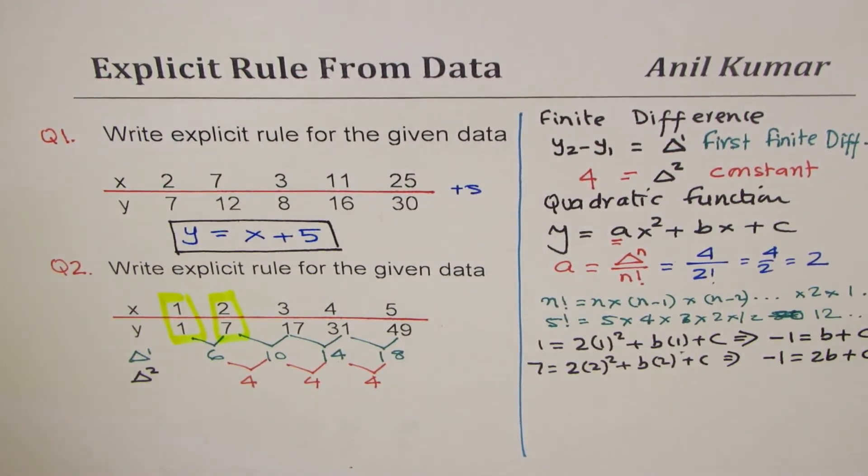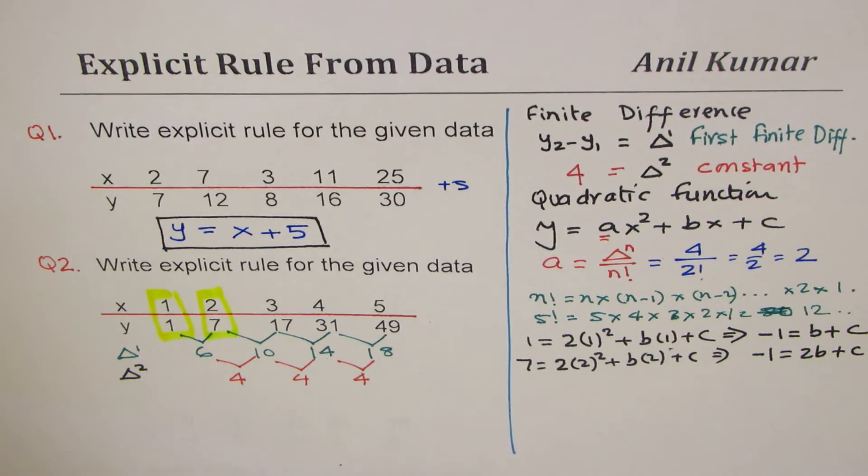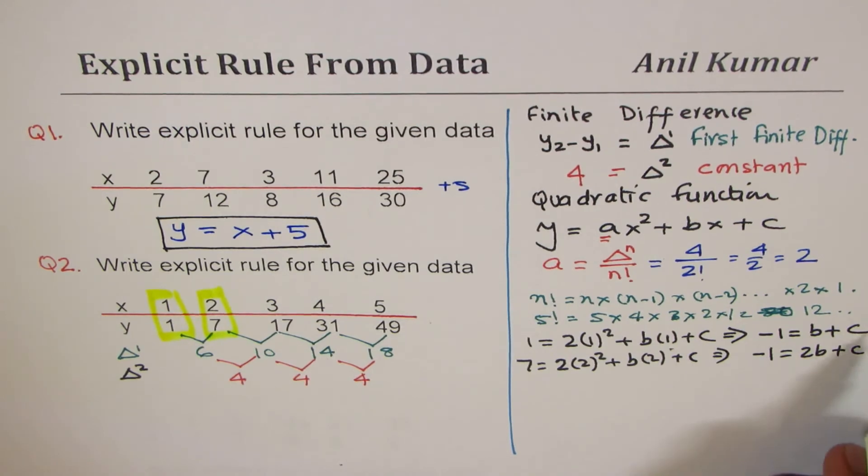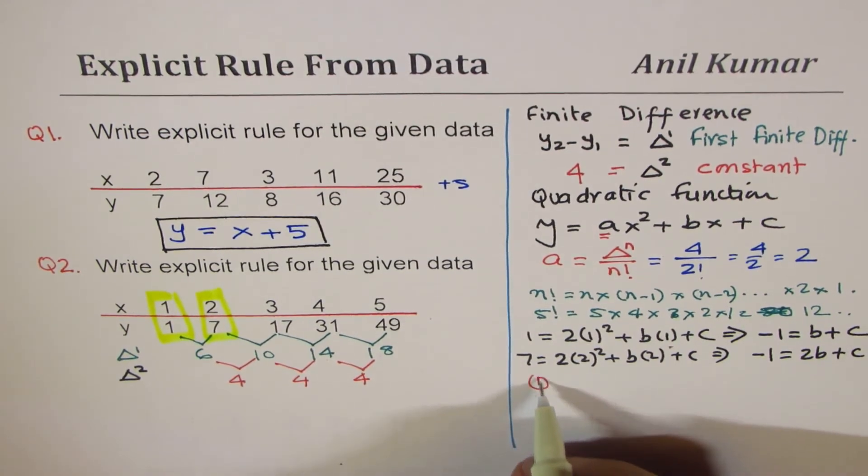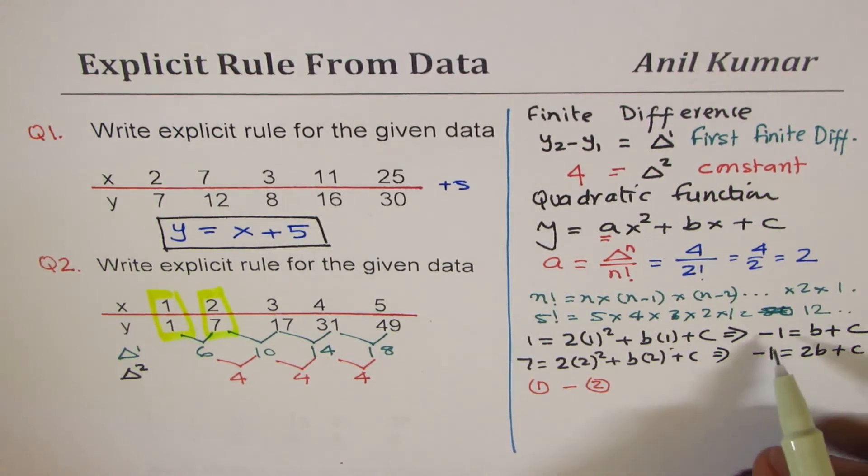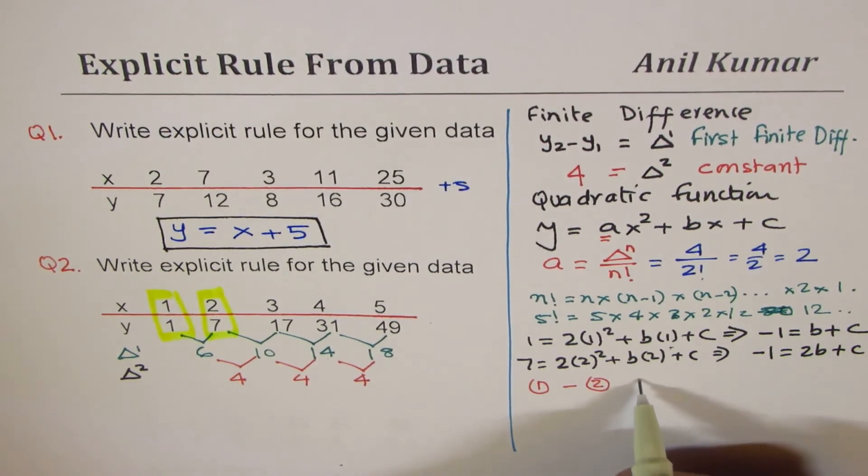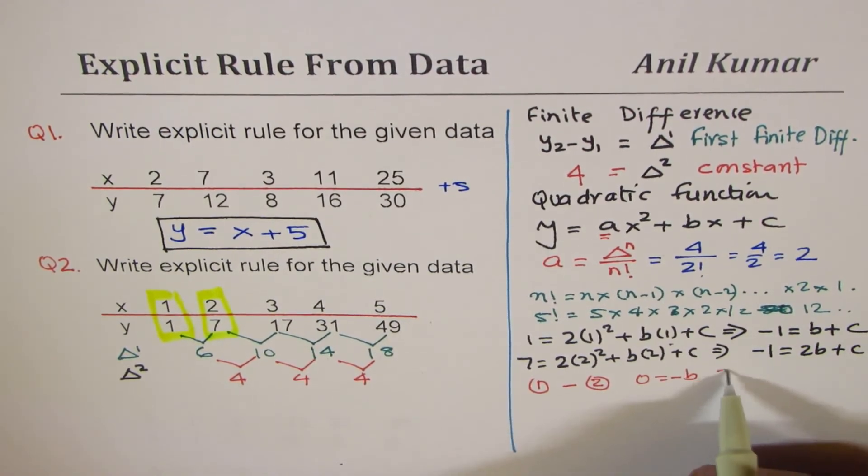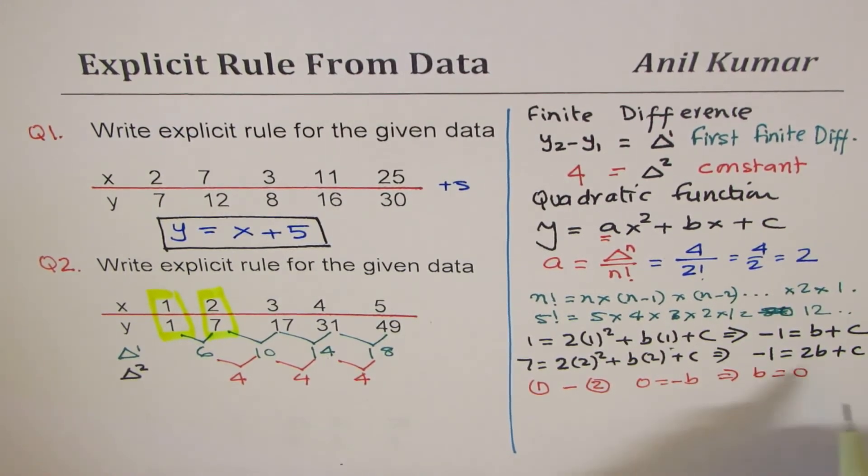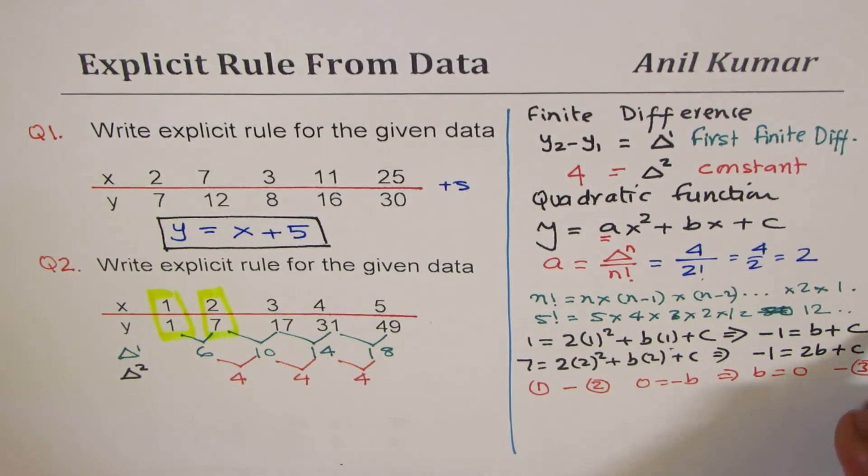Now from these two equations, we can do equation 1 minus 2. If I do equation 1 minus equation 2, c and c cancel away, 1 and 1 cancel away, so what we get here is 0 equals minus b, or b equals 0.